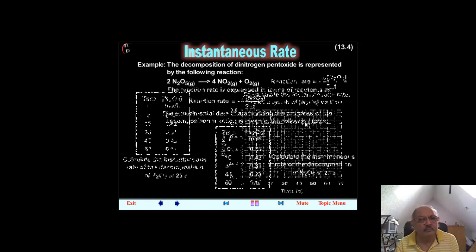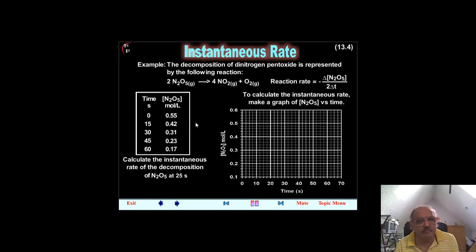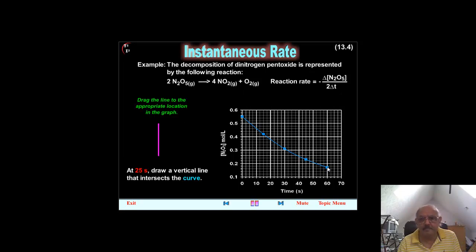To calculate the instantaneous rate, make a graph of concentration N2O5 versus time. So now we are going to have to draw the graph. So here are the points at 0. At 15, it is 0.42. At 30, it is 0.31. At 45, it is 0.23. And at 60, it is 0.17. At 25 seconds, draw a vertical line that intersects the curve. And drop it at 25 seconds.